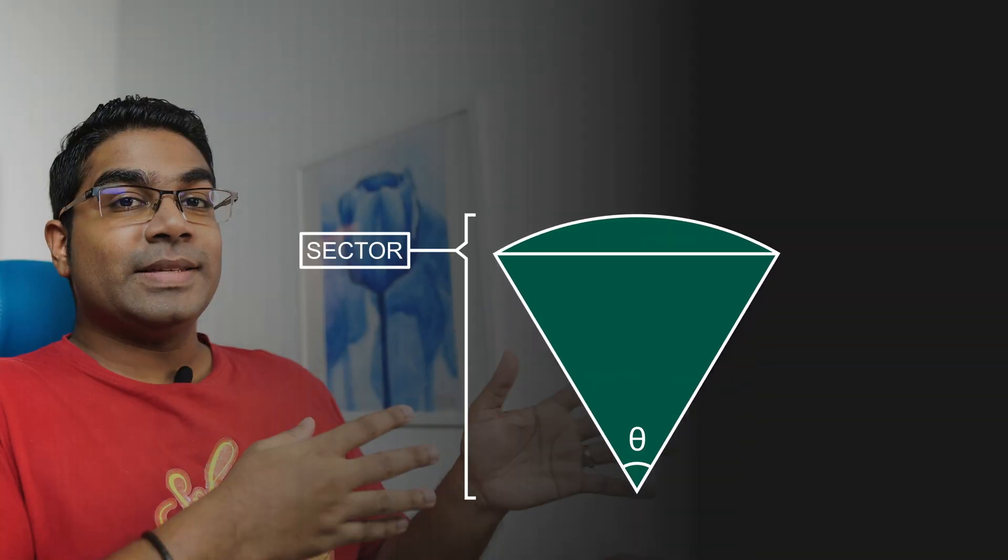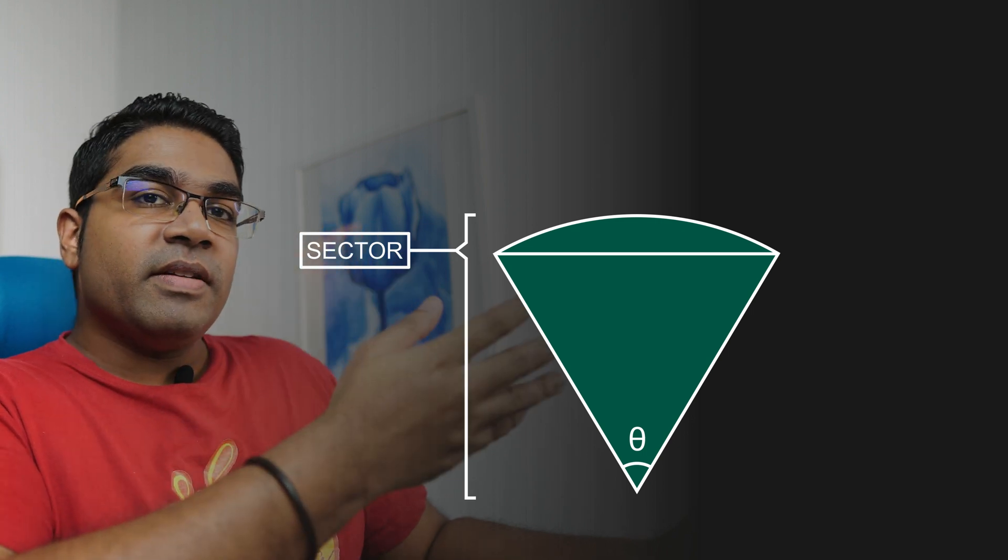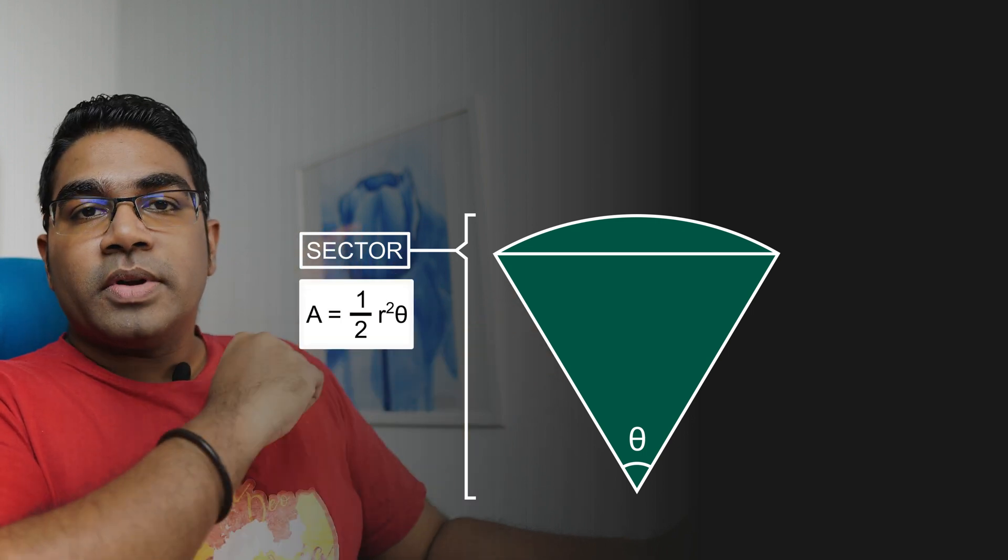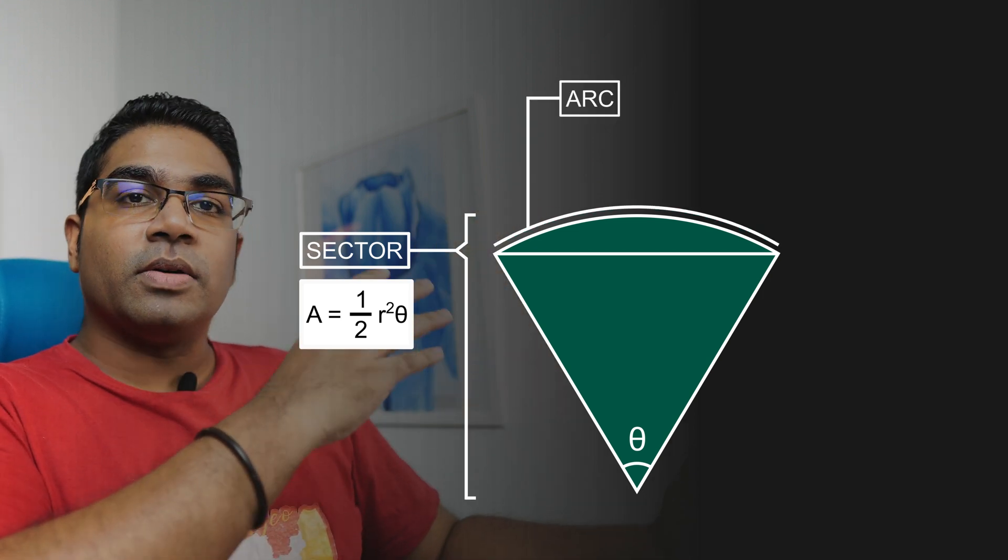Let's review all the formulas we use in circular measure. This is a sector of a circle. For the sector of the circle we can find its area using the formula 1/2 r² θ.